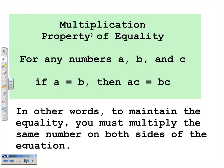The multiplication property of equality: for any numbers a, b, and c, if a is equal to b, then a times c is equal to b times c. Just like the other properties, to maintain the equality, you have to multiply both sides by the same number. For example, with 4 is equal to 4, you may multiply each side by negative 2 — whatever you do to one side, you do to the other — giving negative 8 is equal to negative 8.